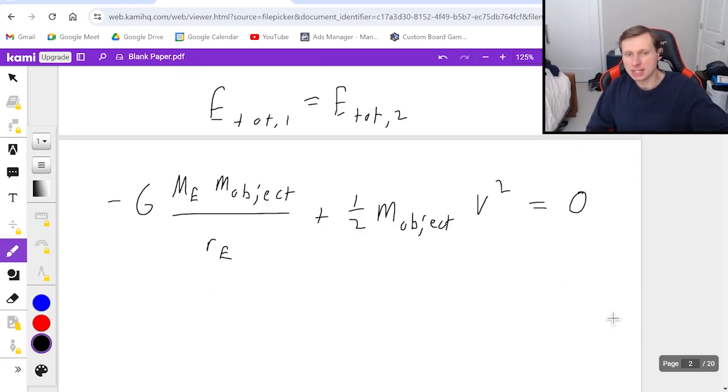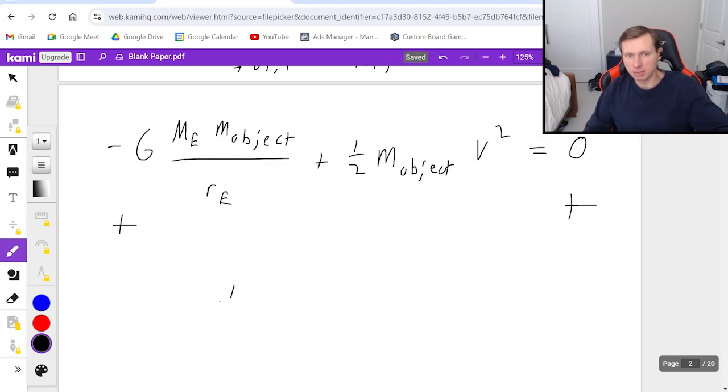Now, if I want to solve for the velocity, it's about getting v by itself, so I'm going to add this term to both sides. So on the left, I'm left with 1 half mass object times velocity squared, equals to, now positive G, because I added it to that side, mass Earth mass object over radius of the Earth.